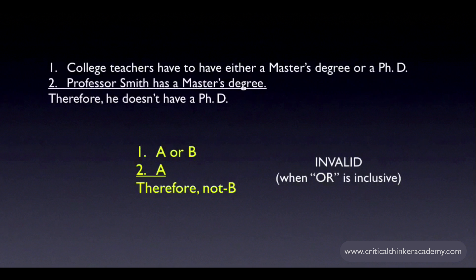An inclusive OR is one that asserts that A is true, or B is true, or both may be true. The only case that it rules out is the case where both are false.